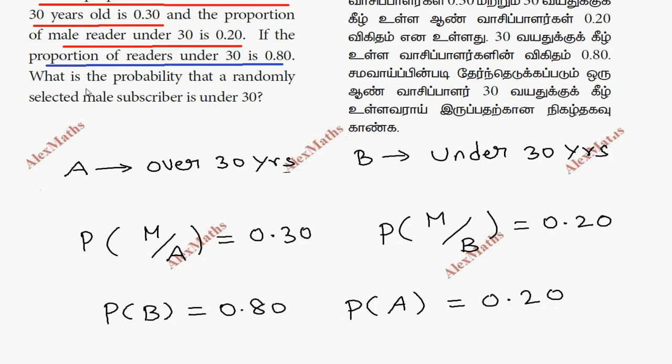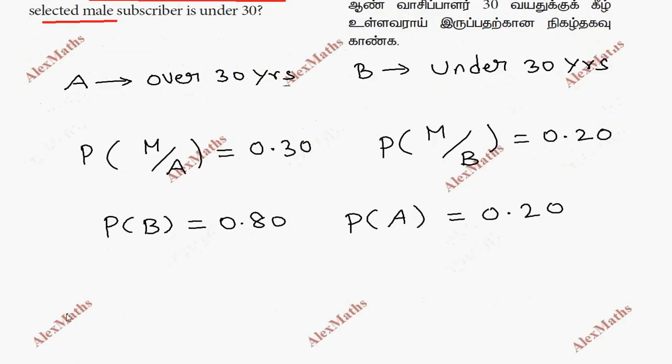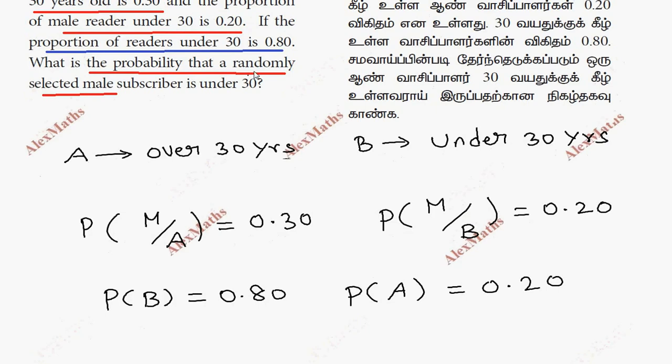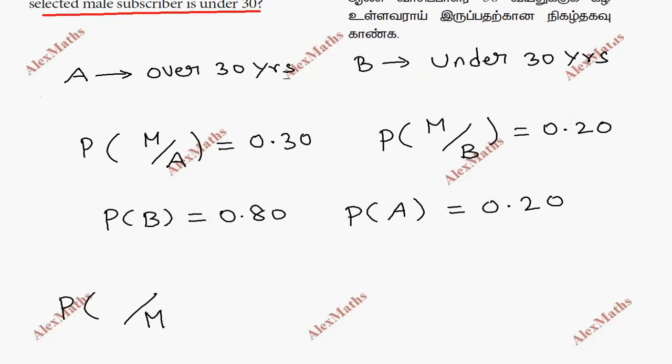What is the probability that a randomly selected male subscriber is under 30? Under 30 is B, so we need to find P of B given M.